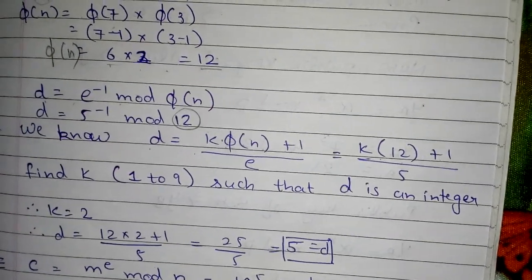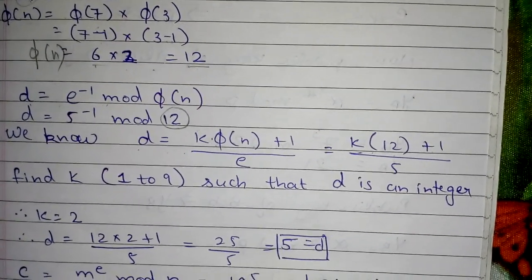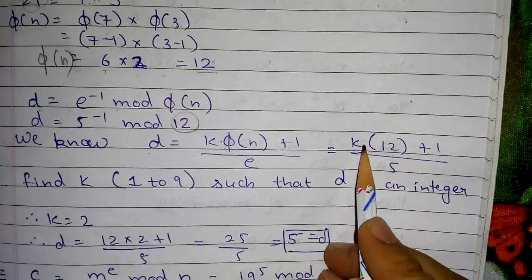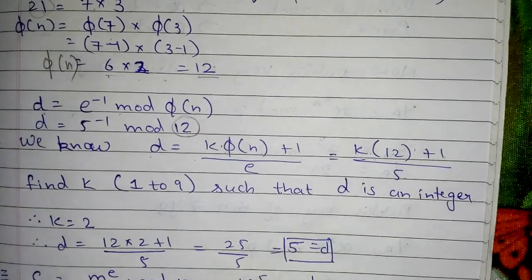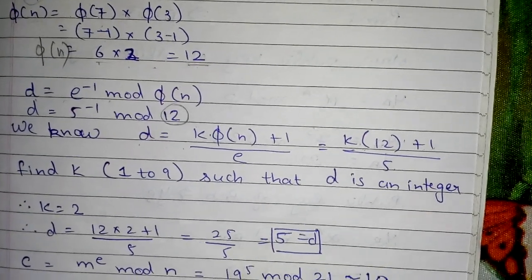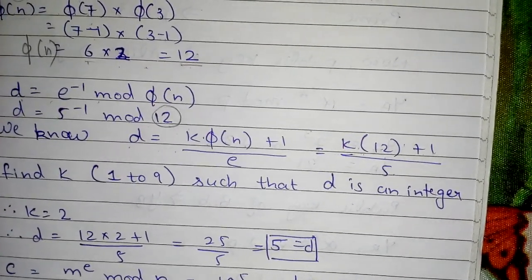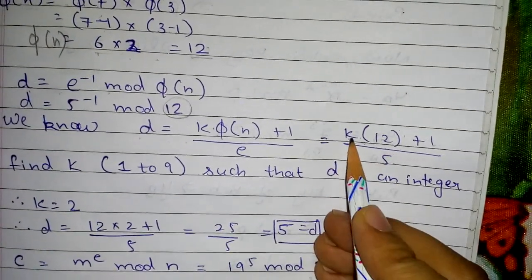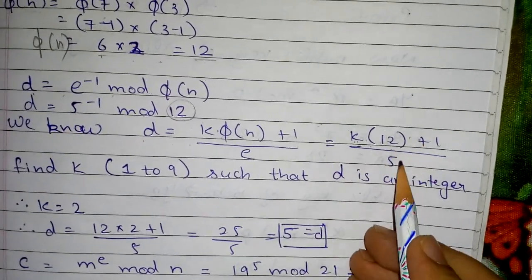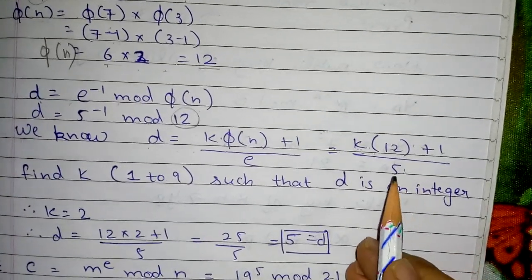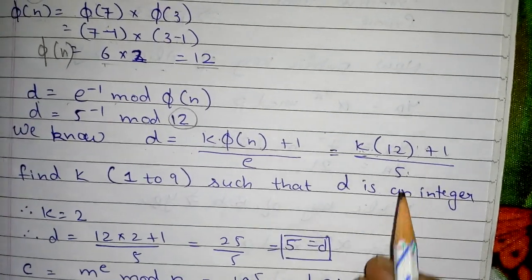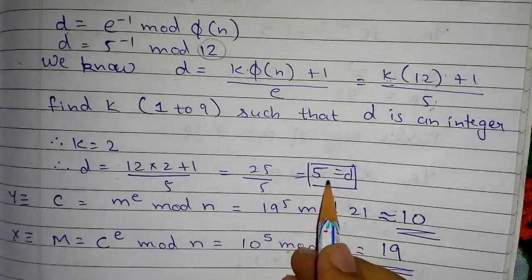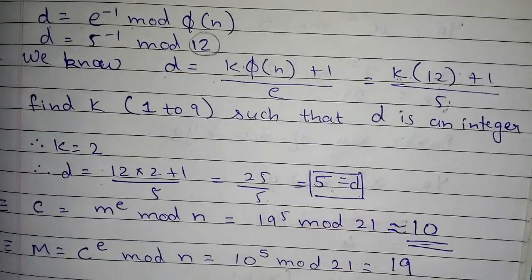Let's try some values for K. If K=1, then (12×1+1)/5 = 13/5, which is not an integer. If K=2, then (12×2+1)/5 = 25/5 = 5, which is an integer. Therefore K=2 and D=5.